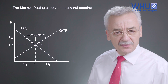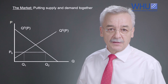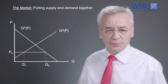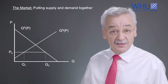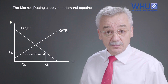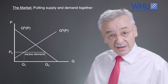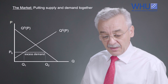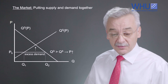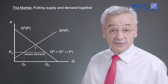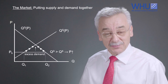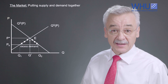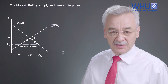Now consider a price below the equilibrium intersection. At this price consumers want to buy Q2 but producers only want to produce Q1 — this is excess demand. In this case, consumers and producers offer and ask slightly higher prices, so the price tends to increase. Supply then increases and demand declines until we reach equilibrium point E, again with P* and Q* denoting the equilibrium price and quantity.